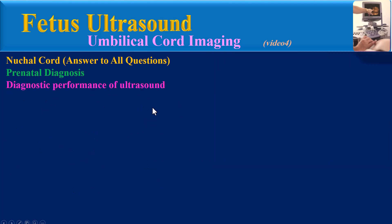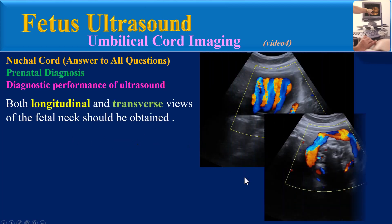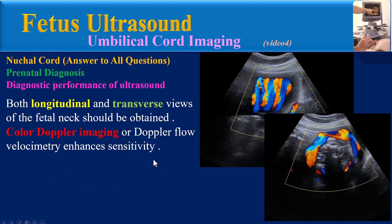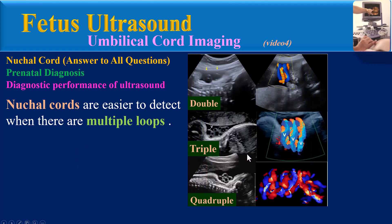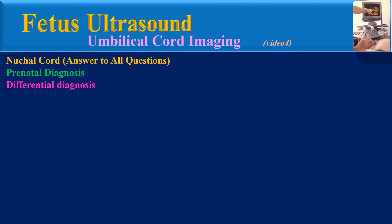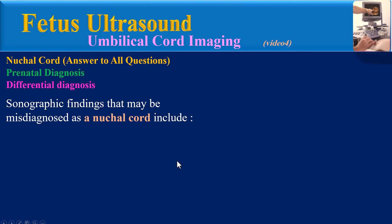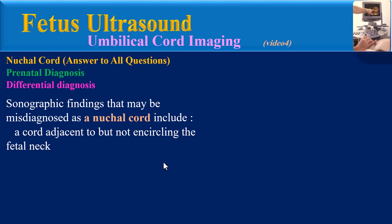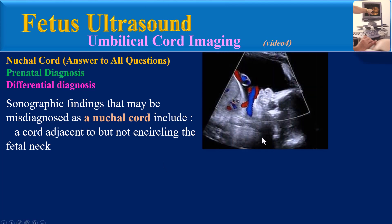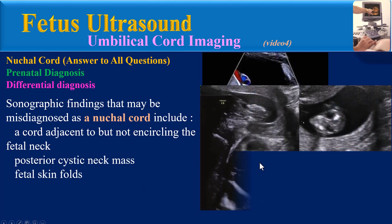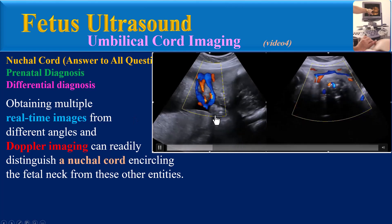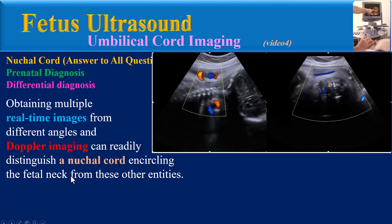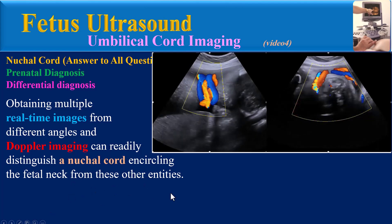Regarding diagnostic performance: both longitudinal and transverse views of the fetal neck should be obtained. Color Doppler imaging or Doppler flow velocimetry enhances sensitivity. Nuchal cords are easier to detect when they are multiple compared with single nuchal cord. Differential diagnoses include a cord adjacent to but not encircling the fetal neck, a posterior cystic mass, fetal skin folds, and amniotic fluid pockets. Multiple real-time images from different angles and Doppler imaging can readily distinguish a nuchal cord from these other entities.